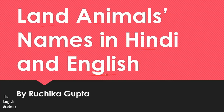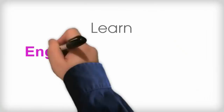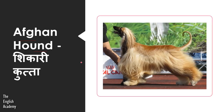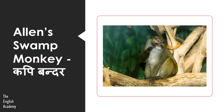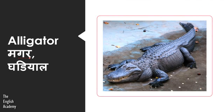And what are their names in English? We will discuss them in English. First of all, Afghan Hound — this is a variety of a dog. We call it Shikari Kutta, and in English it is called Afghan Hound. Next animal is Alan's Swamp Monkey. Next animal is Alligator. Alligator is Mugger or Mugermach or Ghadial. In English, it is called Alligator, or else we also know it as Crocodile.